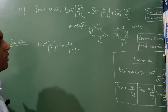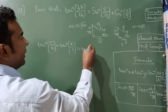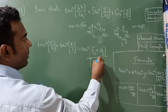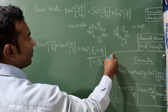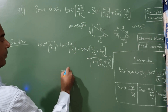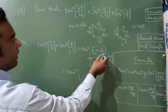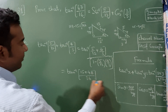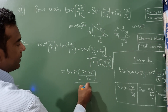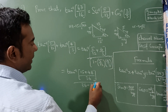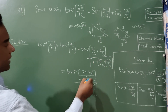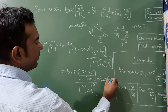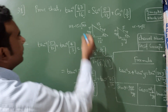Now what is the formula? Tan inverse of x plus y divided by 1 minus xy. So I write tan inverse of (5 by 12 plus 4 by 3) divided by (1 minus 5 by 12 times 4 by 3). Taking LCM of 36: numerator gives 15 plus 48 which is 63, denominator gives 36 minus 20 which is 16. The 36s cancel, giving tan inverse of 63 by 16. Hence proved.